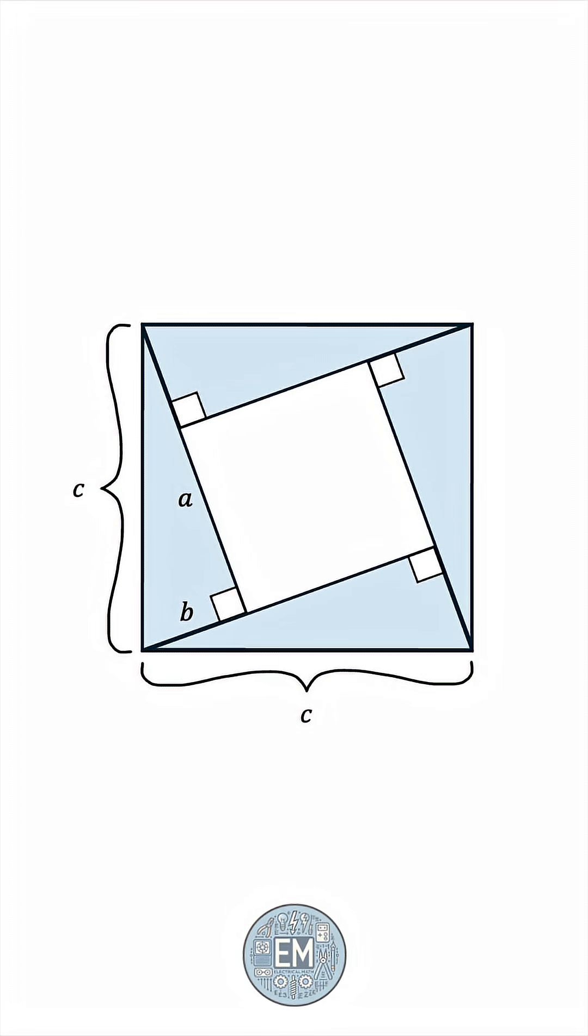Very good. Remember that all triangles are identical. So, for example, the lower triangle has legs B and A, like this.